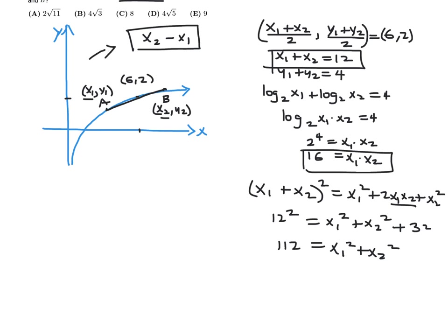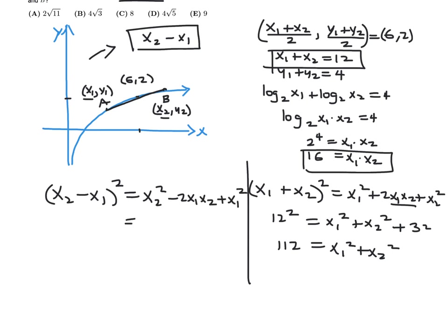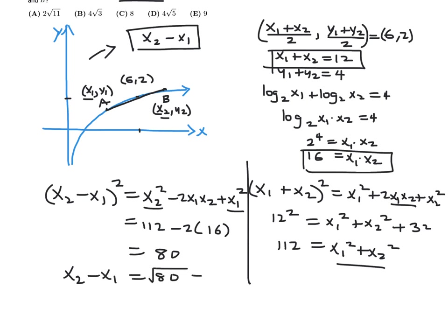Now (x₂ - x₁)² equals x₂² - 2x₁x₂ + x₁², which is x₁² + x₂² minus 2x₁x₂. That's 112 minus 32, which is 80. Therefore if we take the square root of both sides, we get the positive difference, and that in a simplified radical is 4 root 5.